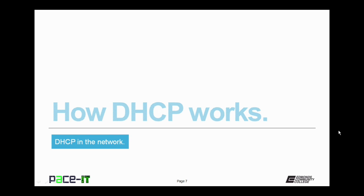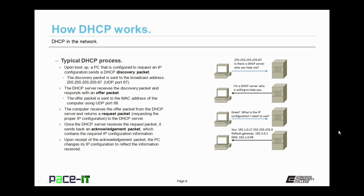Here is the typical DHCP process. Upon boot up, a PC that is configured to request an IP configuration sends a DHCP discovery packet. The discovery packet is sent to the broadcast address 255.255.255.255 on UDP port 67. The DHCP server is listening to that port for that discovery packet. When the DHCP server receives the discovery packet, it responds with an offer packet — basically saying, hey, I'm here to help. The offer packet is sent back to the MAC address of the computer requesting help, on port 68.